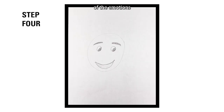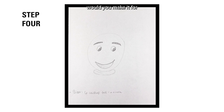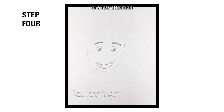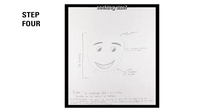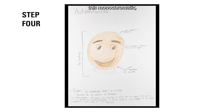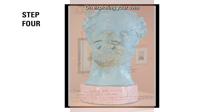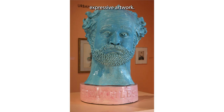Pick your favorite of the emotions you designed and draw it on a separate page. On the page, write notes that answer these questions: What size would you make it for your chosen expression — would it be monumental or a less attention-seeking size? How would you construct this out of clay? What textures would you include and how would you make them? If you were going to make this monochromatic, what one color would you use? Great work everyone on exploring your own expressive artwork. Thank you for joining us and taking an art break with Breathless.